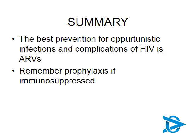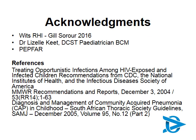In summary, the best prevention for opportunistic infections and complications of HIV is ART. If we get our children diagnosed early and onto ARVs, we need not be concerned about these rare and complicated diseases. Prophylaxis is very important in immunosuppressed children, and early diagnosis with adequate treatment is essential. Thank you.